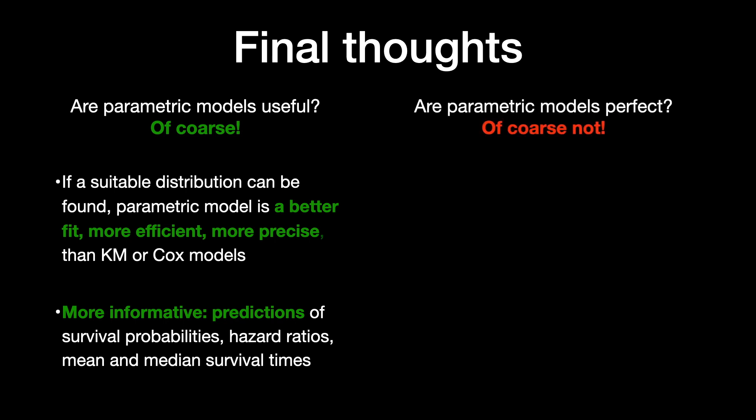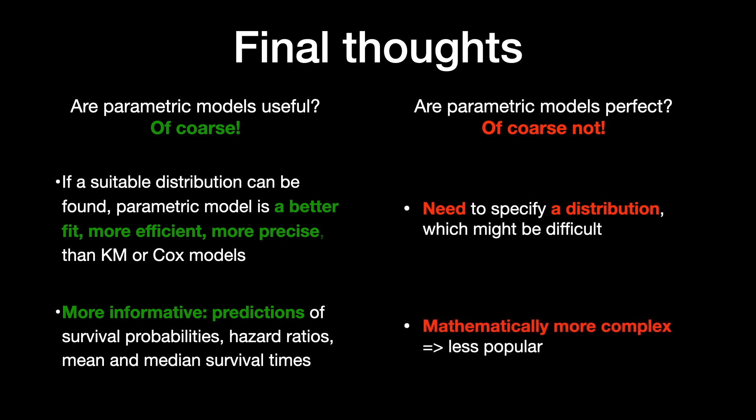The other question is, are parametric models perfect? And the answer is, of course, not. And the first disadvantage of parametric models is that they need to specify the distribution, which may be pretty difficult to identify. Secondly, they are also mathematically more complex than Kaplan-Meier method, and are therefore less popular, which is greatly decreasing comparability of results among studies.